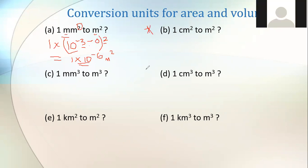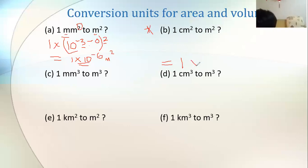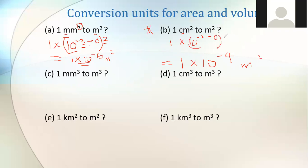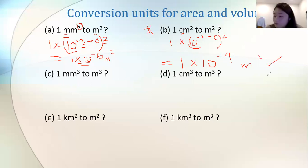Convert 1 cm² to m². Conversion is very important — Cambridge purposely gives weird units, and if your conversion is wrong, all your work is gone. So: centi is negative two, minus zero, squared — that's negative four. So the answer is 1 times 10⁻⁴ m².